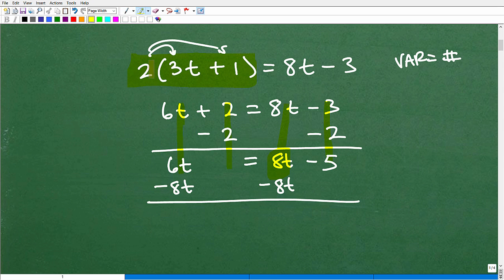All right, so now I'm going to add down, okay? So we've got 6t plus negative 8t. This is negative 2t is equal to 8t plus the negative 8t. That goes away. That's what we're hoping for. And that's just going to leave us with our negative 5 over here. All right, so we have negative 2t is equal to negative 5. So to solve for t, I'm going to divide this equation, both sides of it, by negative 2.